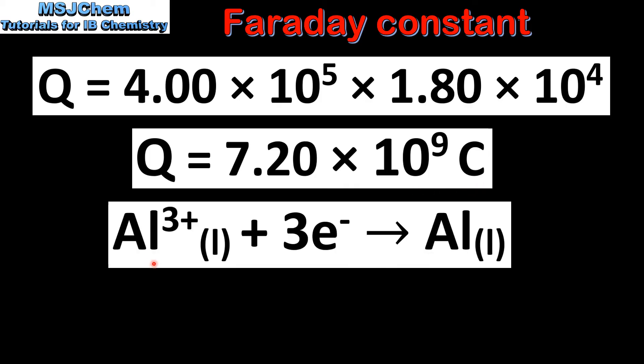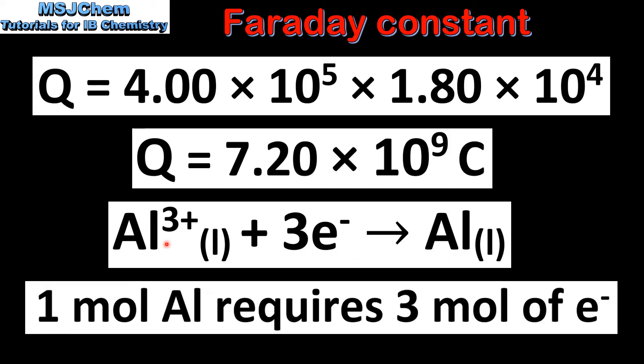Next we write the equation for the reduction of molten aluminium ions to form molten aluminium. Because the aluminium ion has a 3 plus charge, one mole of aluminium ions requires 3 moles of electrons.